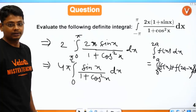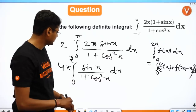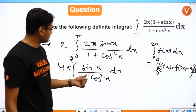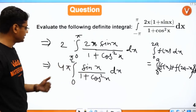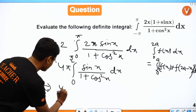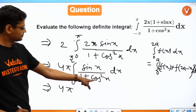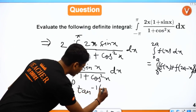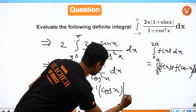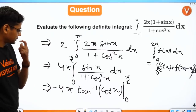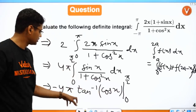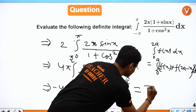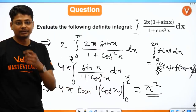The answer is π². Praveen Goel is saying yes, and I also think it should be π². With cos x = t, minus sin x dx = dt, this turns into 4π times ∫ dt/(1 + t²), which gives minus 4π tan⁻¹(t), evaluated with cos x from 0 to π/2. When x = π/2, t = 0; when x = 0, t = 1, so it becomes π/4. Hence the answer is π².